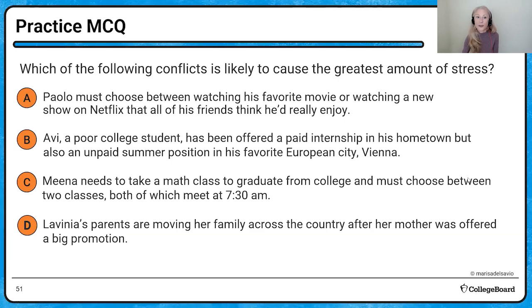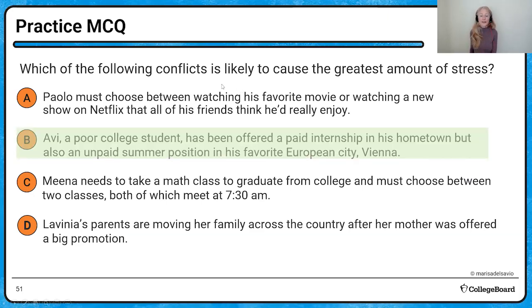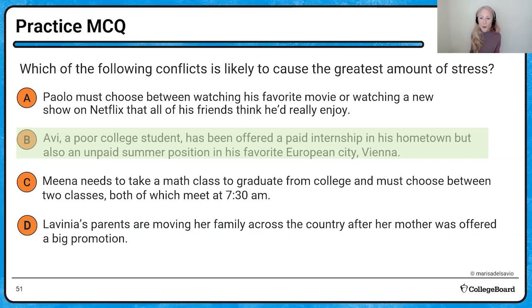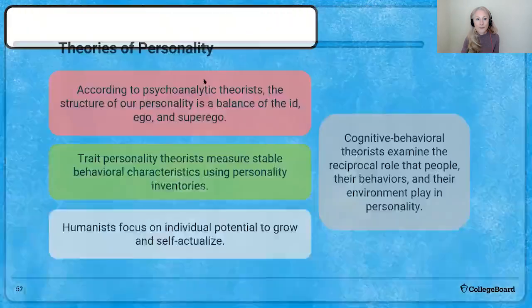Another practice question about motivational conflicts: which creates the greatest amount of stress? This is a double approach-avoidance scenario — you have a paid internship in your hometown but an unpaid summer position in your favorite European city, which for Avi happens to be Vienna. There's good and bad about both: one pays but you stay home; the other is unpaid and you'll struggle financially, but you get to go to a really exciting European city.